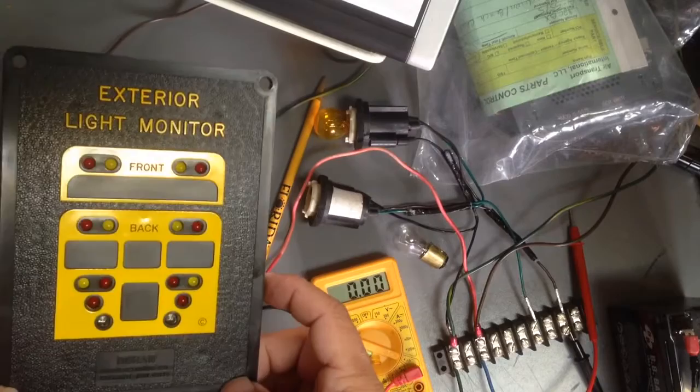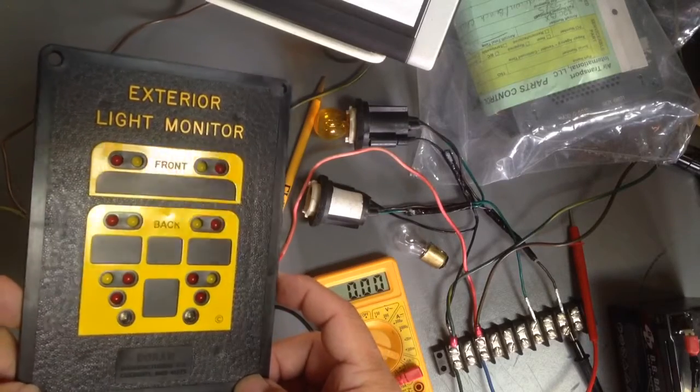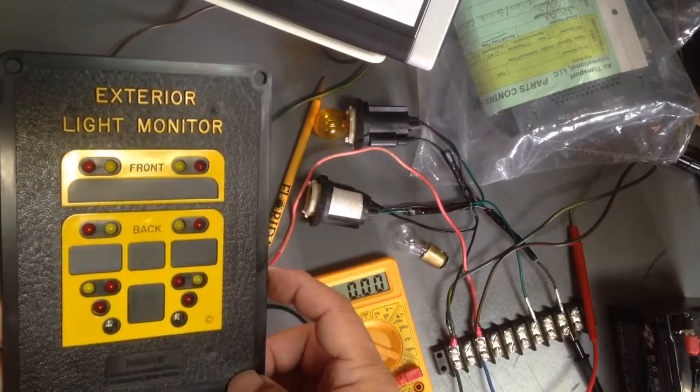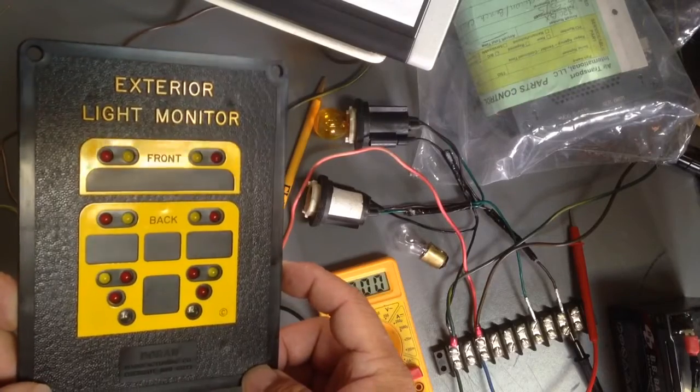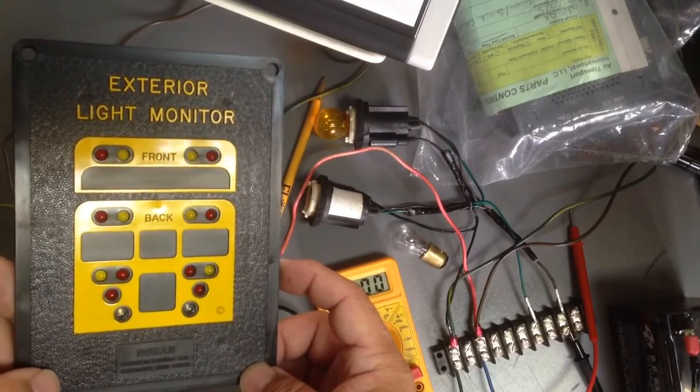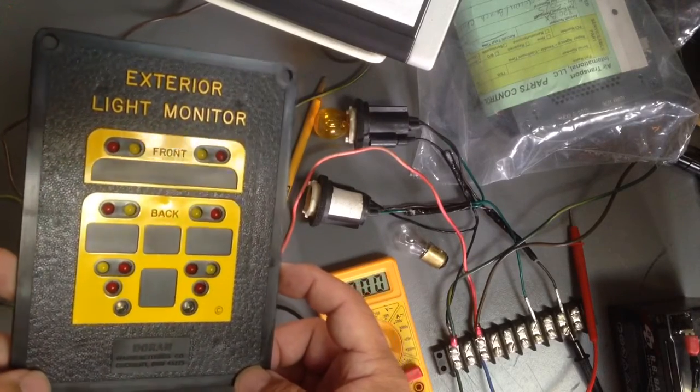These operate off of a reed relay with a coil wrapped around them that pass current through the coil and pull in the relay.